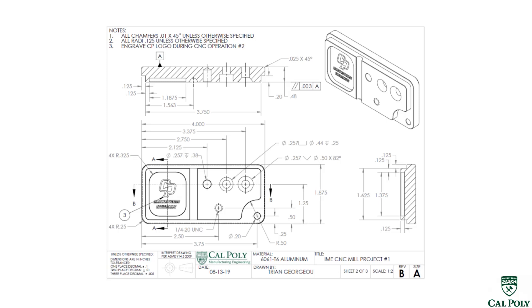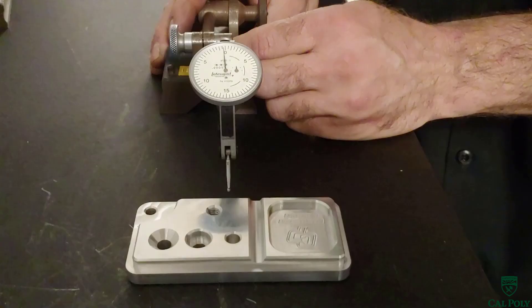Our GD&T callout for parallelism on this part shows three thousandths of an inch. This means the total movement of the needle should not exceed three thousandths of an inch or six graduation lines. This is the total sweep of the needle. This means that the needle may go in both directions negative or positive but cannot exceed three thousandths of an inch total.